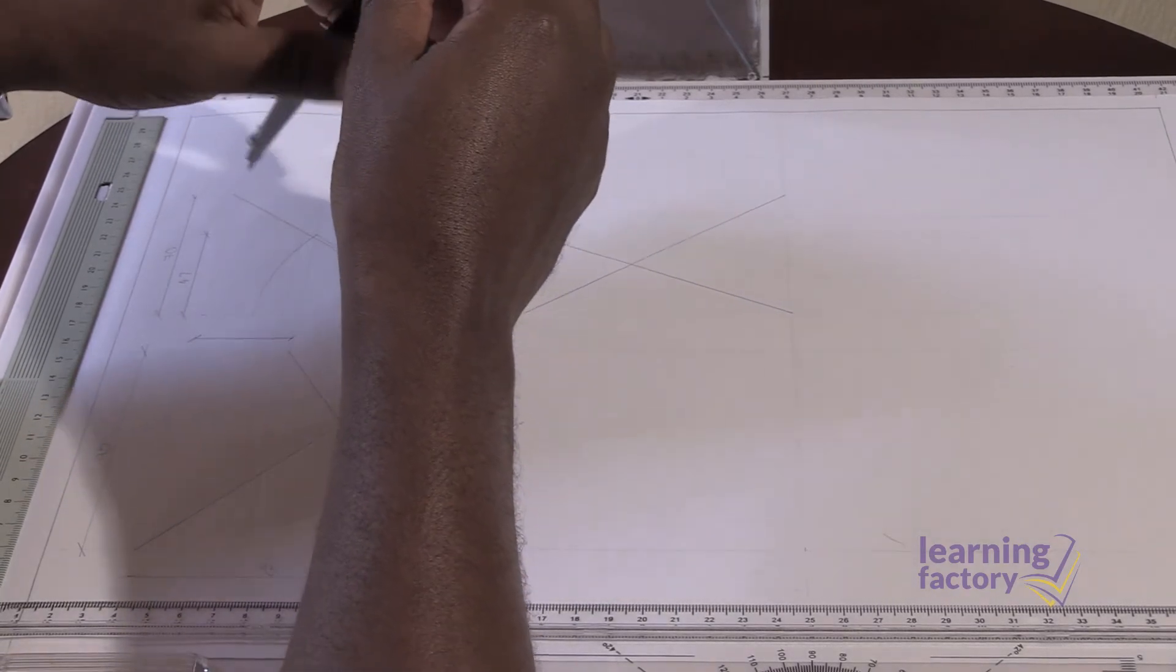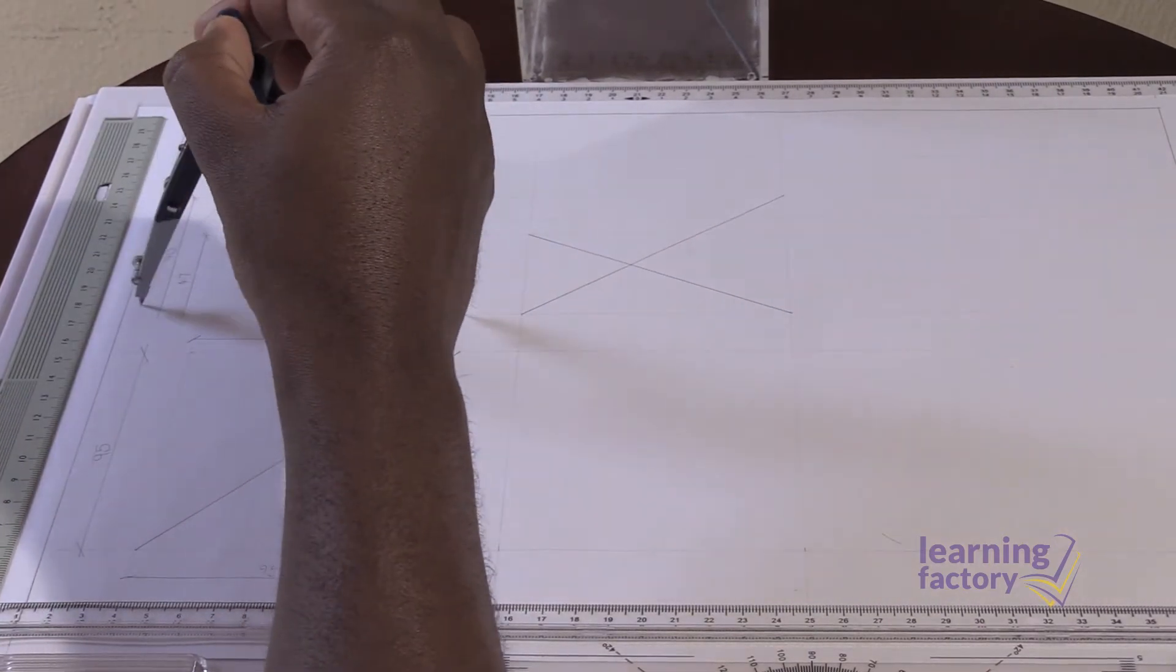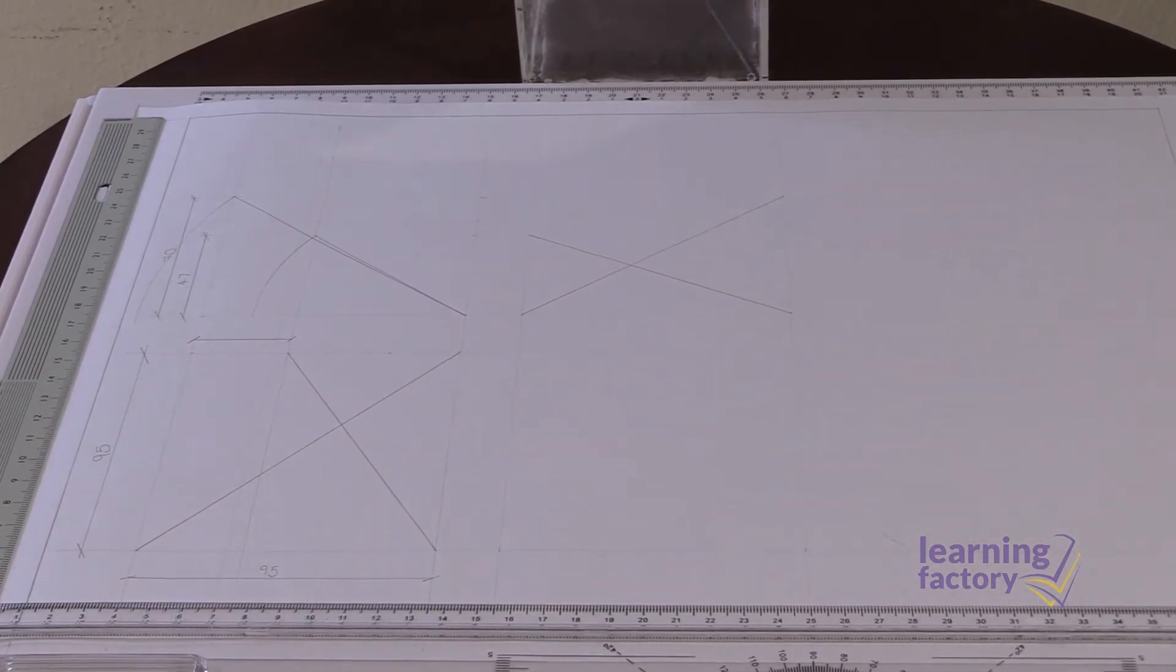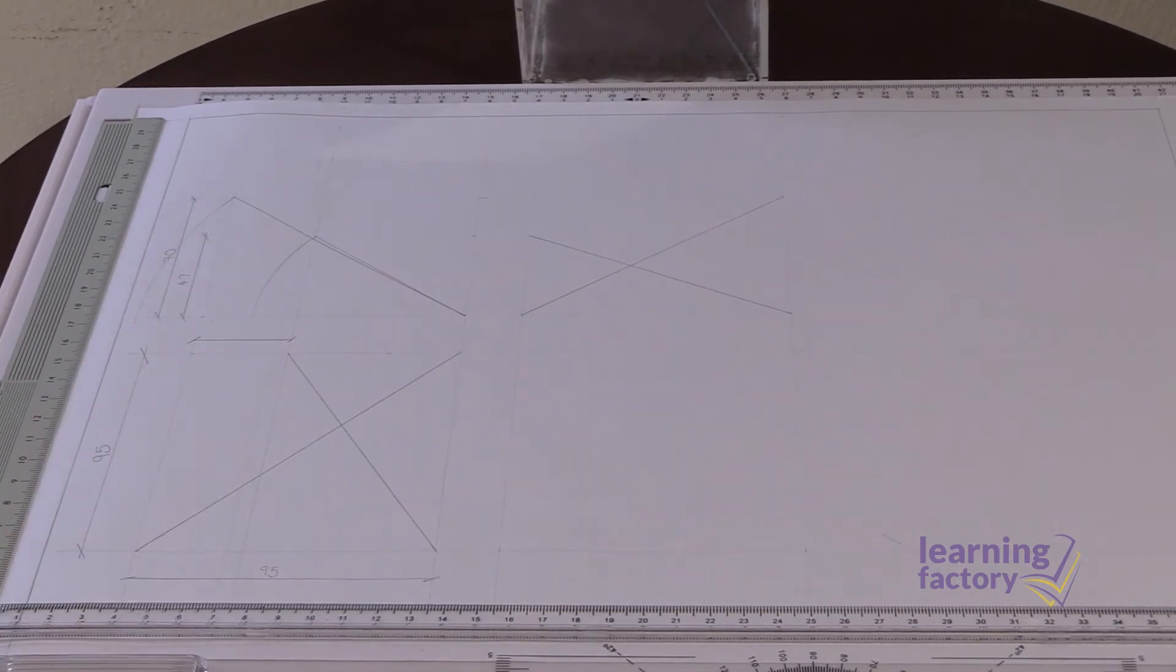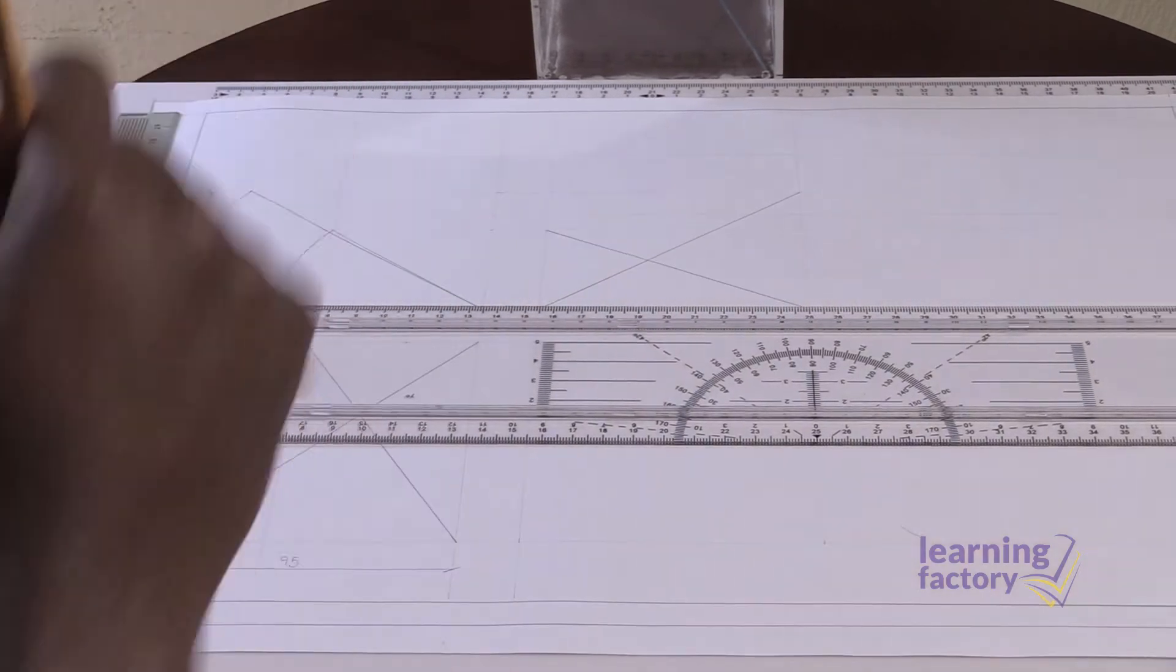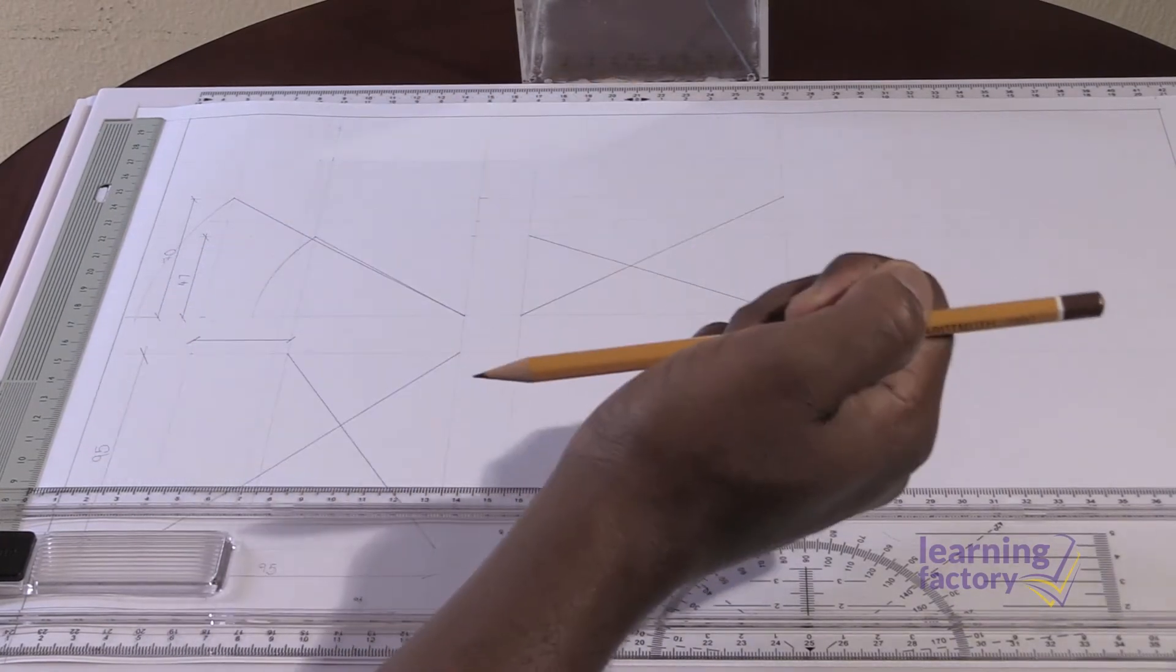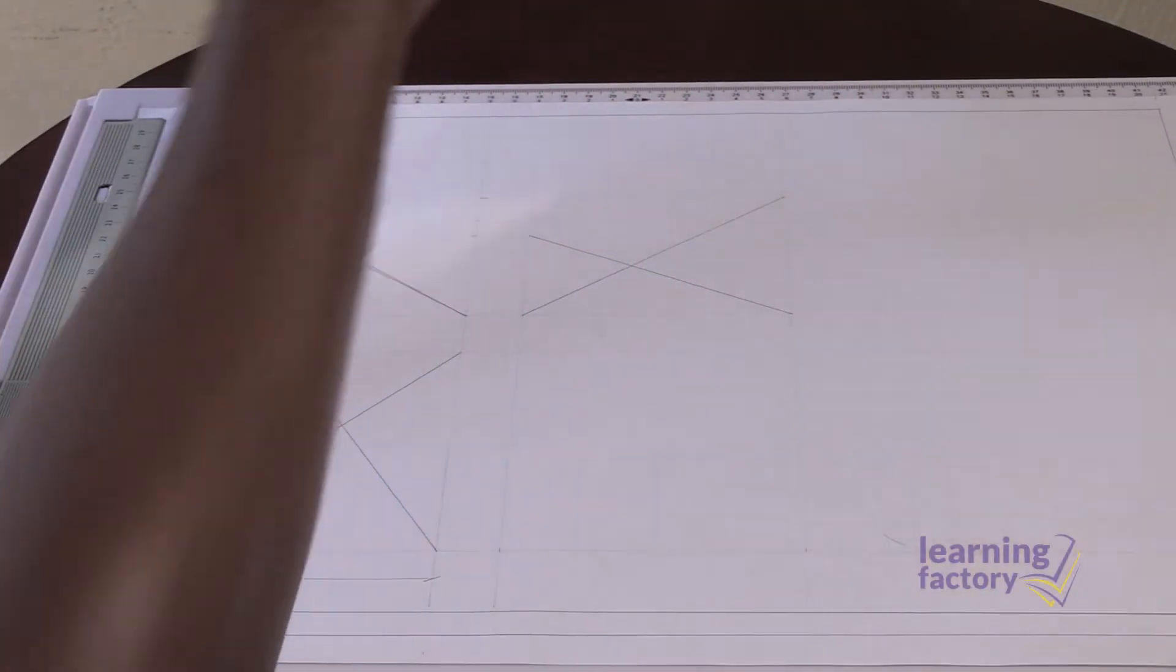We'll do the same for the green stick, bringing it down to the horizontal. Once we've done that, we need to extend that construction line to cross the arc from the green stick. We're going to drop the lines from these curves where they intersect the horizontal and bring them vertically downwards to our plan.